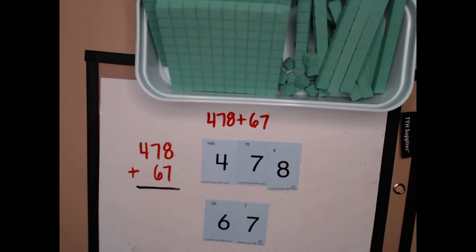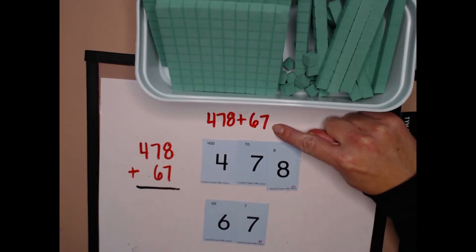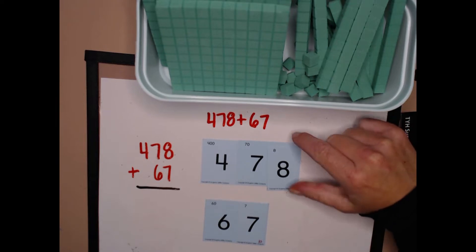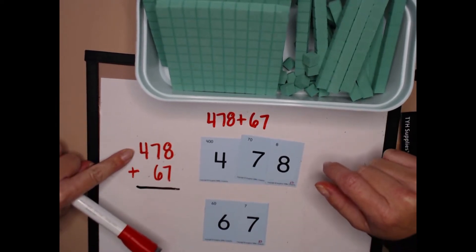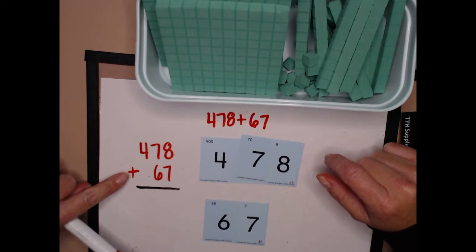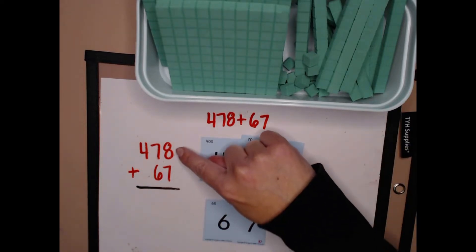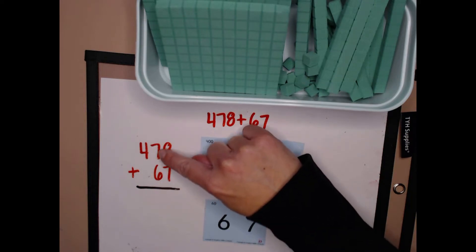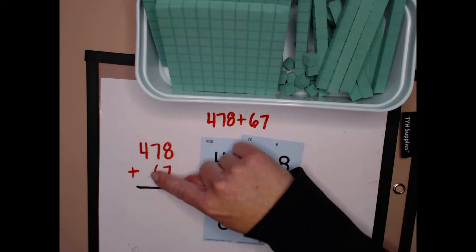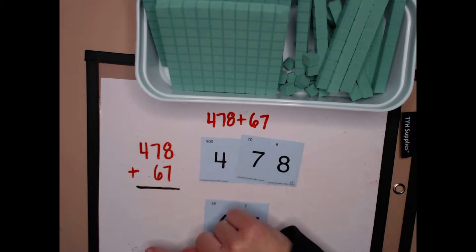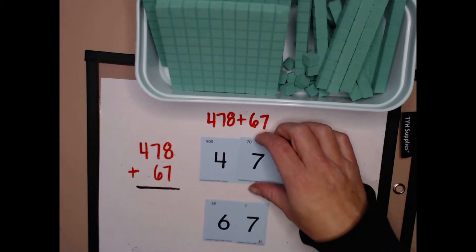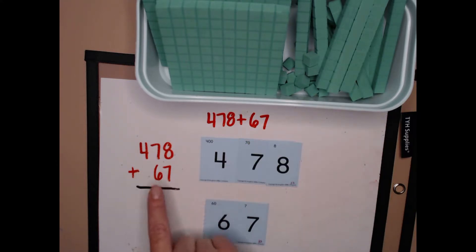Show all totals. Let's try adding four hundred seventy-eight plus sixty-seven. I can write them vertically — four hundred seventy-eight plus sixty-seven — and I make sure that my columns are lined up. I have my ones together, my tens together, and my hundreds together. Now that I know that's the case, I'm going to add my hundreds first.